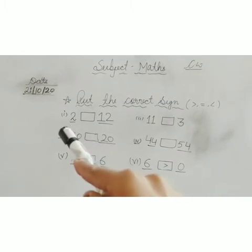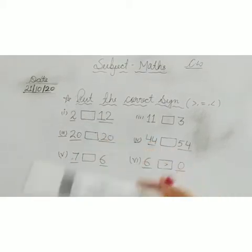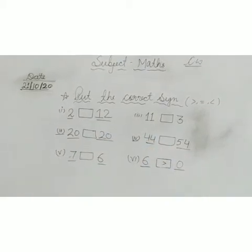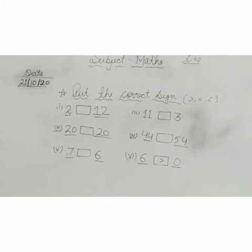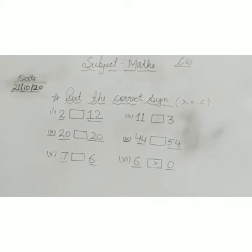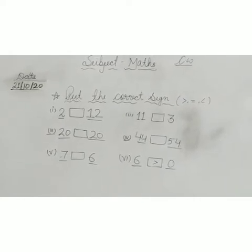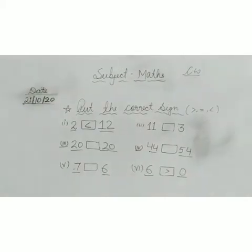In first here are two numbers, 2 and 12, so find out which number is bigger, kaunse number yaan pe bada hai? Yes, 12, so you have to open the mouth of sign towards 12, so put the sign.